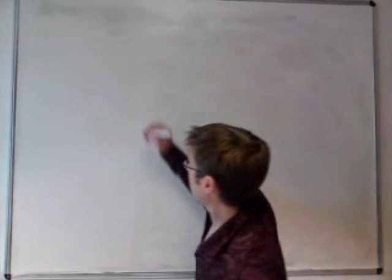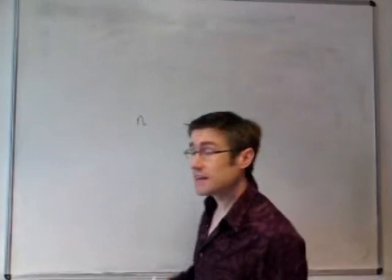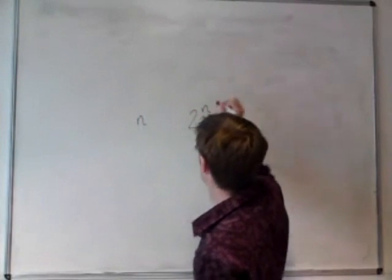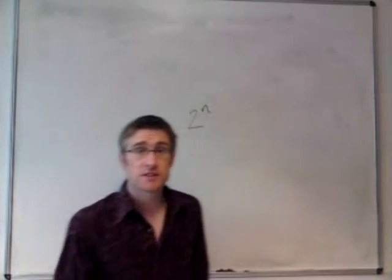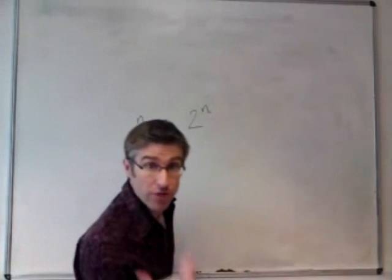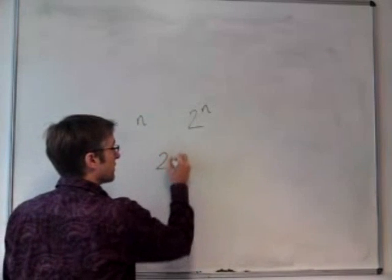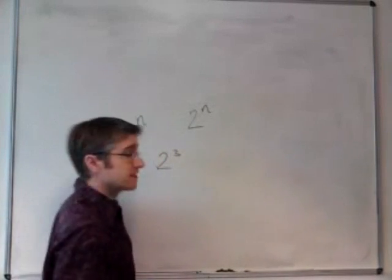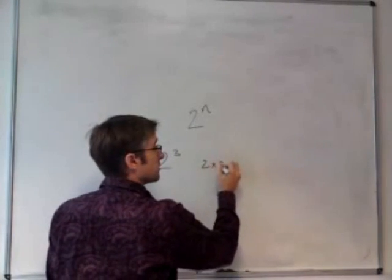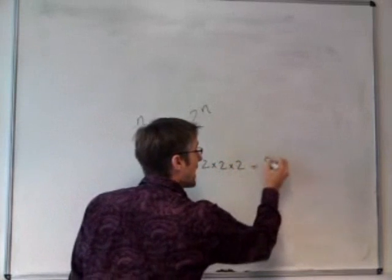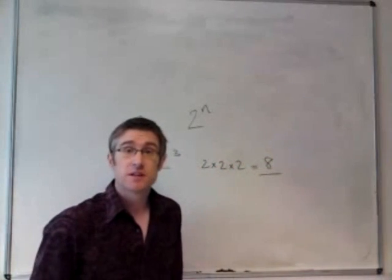In fact, as a general rule, for a compound with N stereocenters, there will be two to the power N possible stereoisomers. So with three stereocenters, we have two to the power three stereoisomers, two times two times two, eight stereoisomers of menthol.